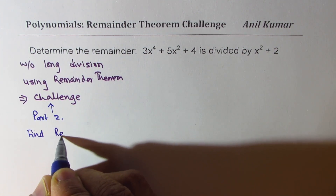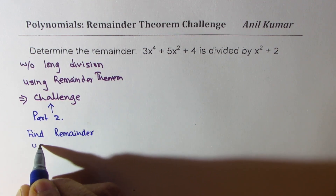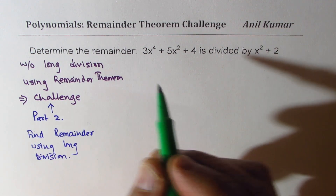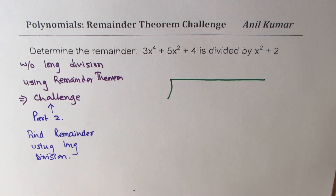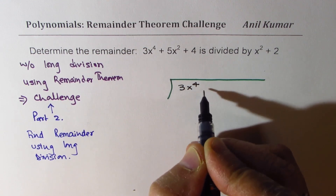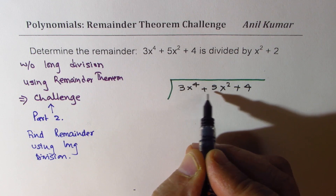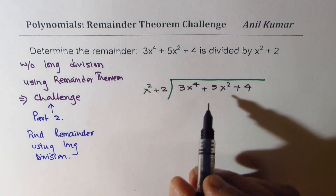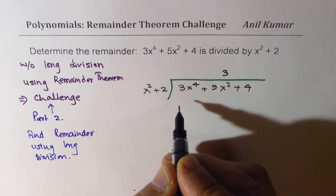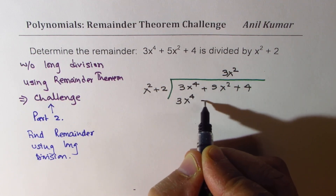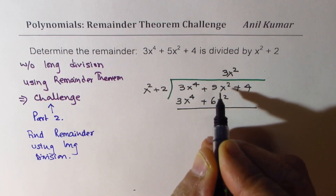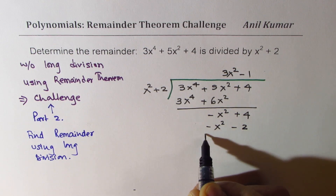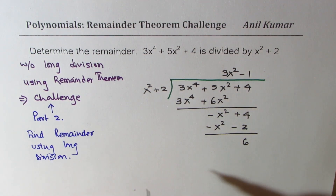Let's first find the remainder using long division — it will just take a minute. So we have the polynomial 3x to the power of 4 plus 5x squared plus 4, and the divisor is x squared plus 2. Dividing, we get 3x squared, giving 3x to the power of 4 plus 6x squared. Taking that away gives minus x squared plus 4. Dividing again by minus 1 gives minus x squared minus 2. The remainder is 6.